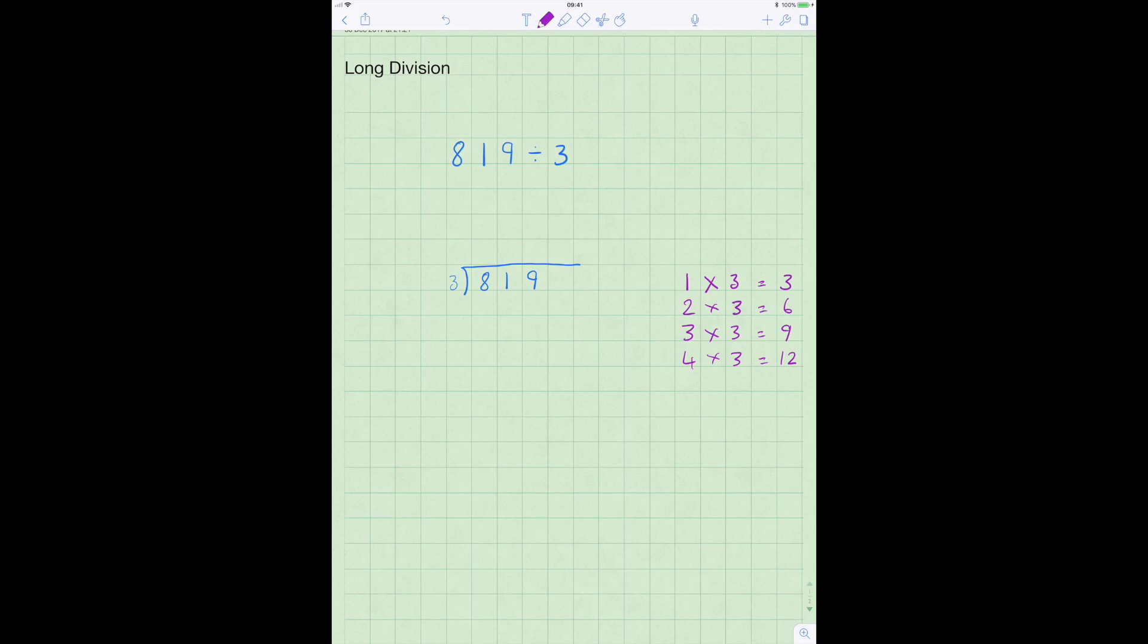So the first question we need to ask is how many times does 3 go into 8? Well we can see from our times table that it goes in between 2 and 3. But in this we're only working out exactly. So we say 3 goes into 8 2 times and 3 times 2 is 6. So we're going to take 6 away from the 8 to work out how much is left. 6 from 8 is 2.